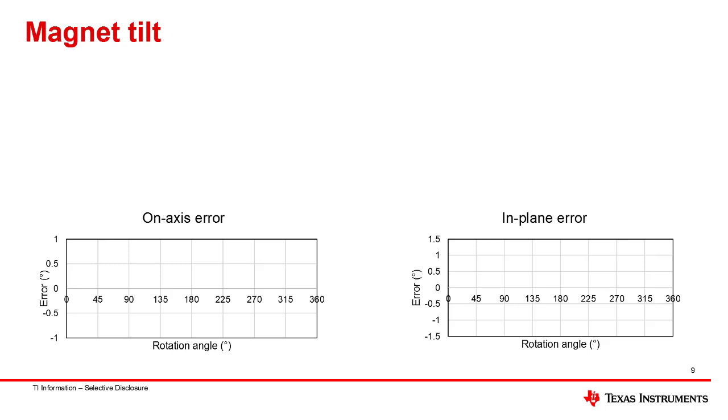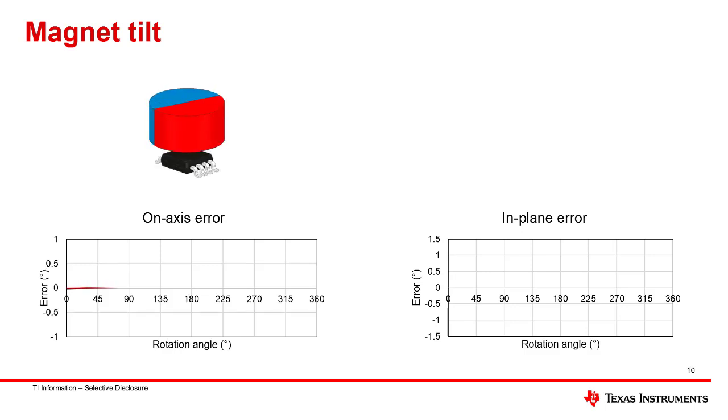Magnet tilt occurs when the magnet body is not aligned orthogonally to the rotating shaft. In this case, the magnet will appear to wobble as it rotates. For small degrees of wobble, a 3D sensor placed on axis might not experience much error as a result.